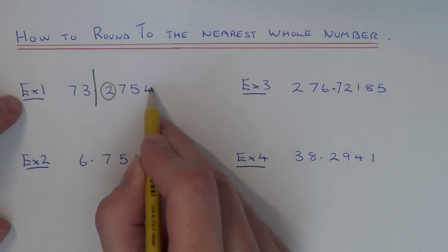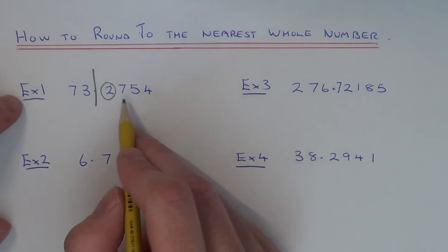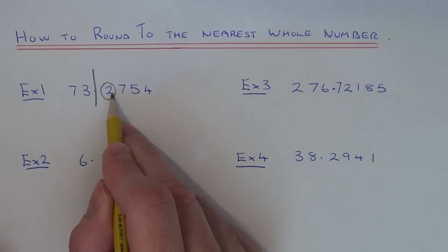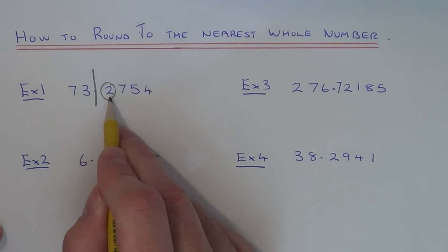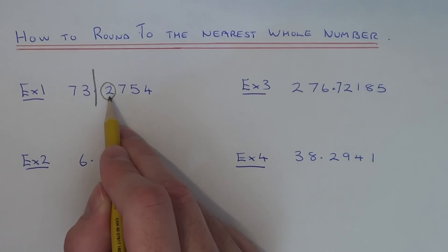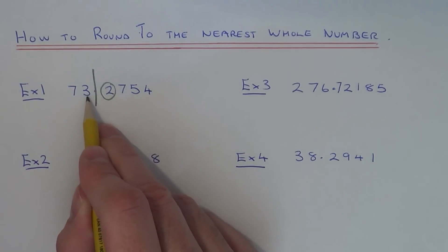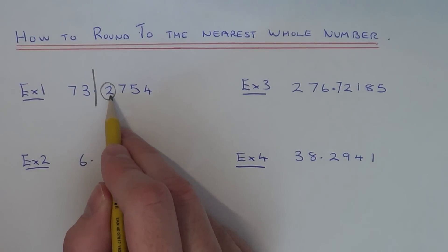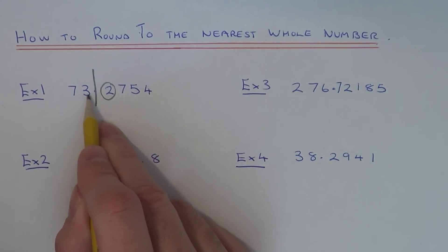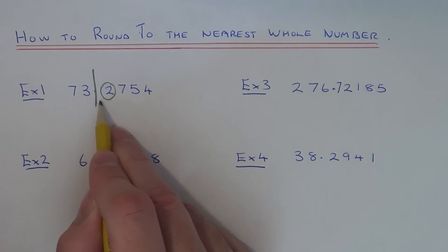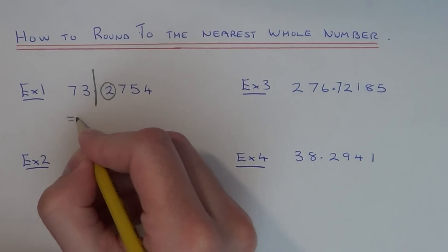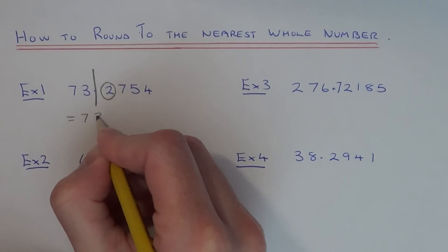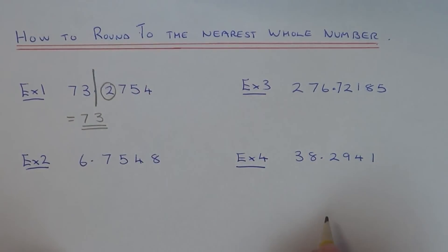It doesn't matter about these other digits here. If this number is less than 5, we round the number down and leave it at 73. If the number is 5 or above, we round it up to 74. Since it's a 2, which is less than 5, this means it's closer to 73. So the final answer is 73 to the nearest whole.